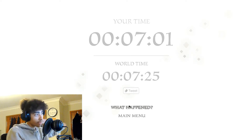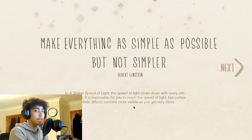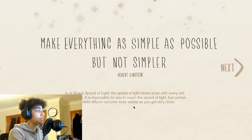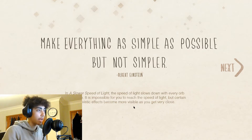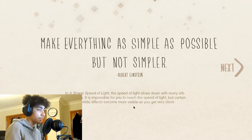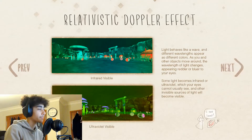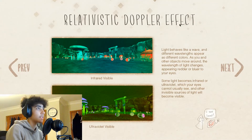You see, visually, the effects exemplified of time dilation and length contraction. In A Slower Speed of Light, the speed of light slows down with every orb you pick up. It is impossible for you to reach the speed of light, but certain relativistic effects become more visible as you get very close. Relativistic Doppler effect — so that's what we were talking about.